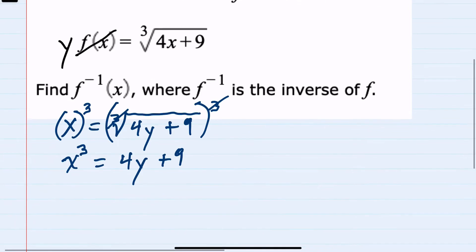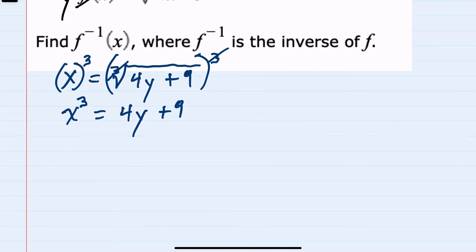Continuing to solve for y I can isolate 4y by subtracting 9 from both sides. So 4y equals x cubed minus 9 and then dividing by 4 on each side gives me y by itself.